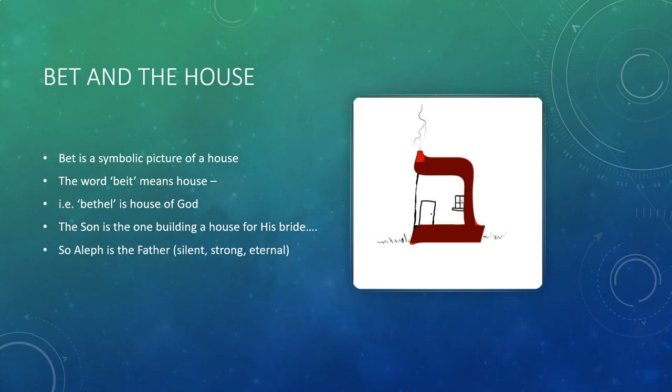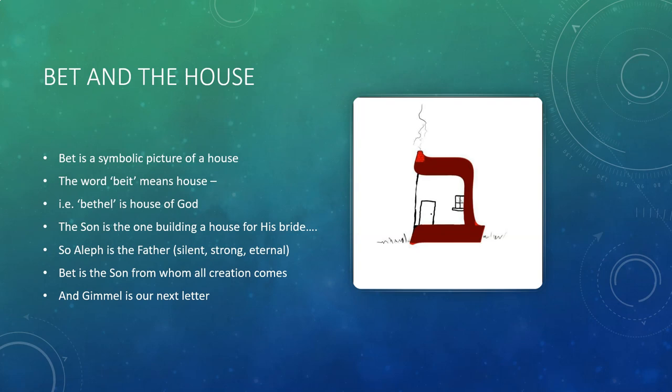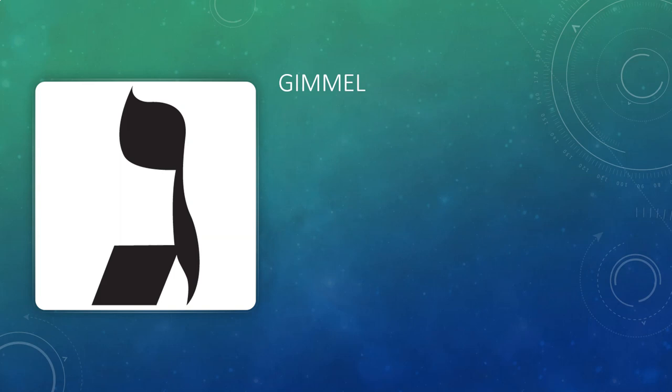So in summary so far: Aleph is the Father — the Silent, the Strong, Eternal One. Bet is the Son, from whom all creation comes, the one who speaks on behalf of the Father. Our next letter is the letter Gimel, and here we'll begin to see the mission and plan and purpose coming into the forefront. Gimel represents the number three — it's the third person of the Godhead, the Holy Spirit.